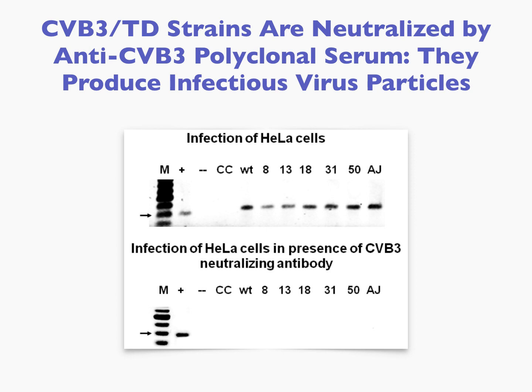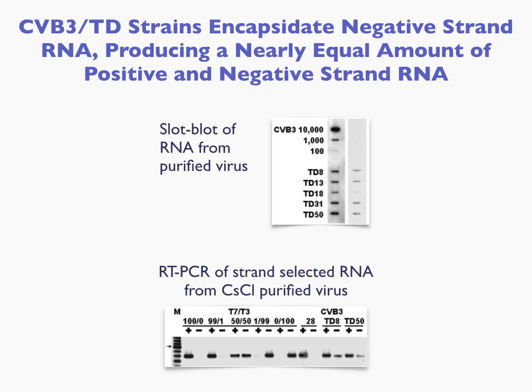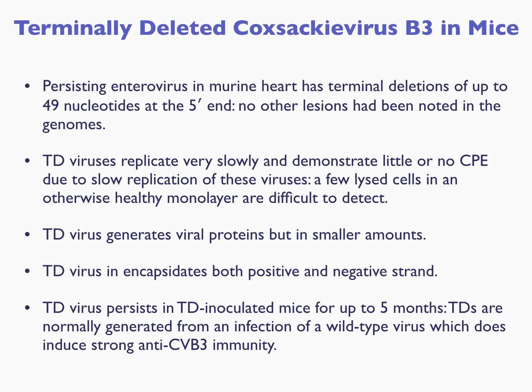These viruses, although defective, are also encapsulating infectious particles. We've been able to show that because you can actually prevent infection by these terminally deleted defective viruses using Coxsackievirus B3 neutralizing antibody. They also do a very unusual thing — they encapsulate the antigenome nearly as well as the genome, which reduces overall infectivity but results in a nearly equal amount of positive and negative strand RNA. Our findings in mice indicated that these deletions accounted for the persistent virus: they replicated very slowly, were not cytopathic in culture, generated viral proteins, and showed a change in the ratio of positive to negative strands.